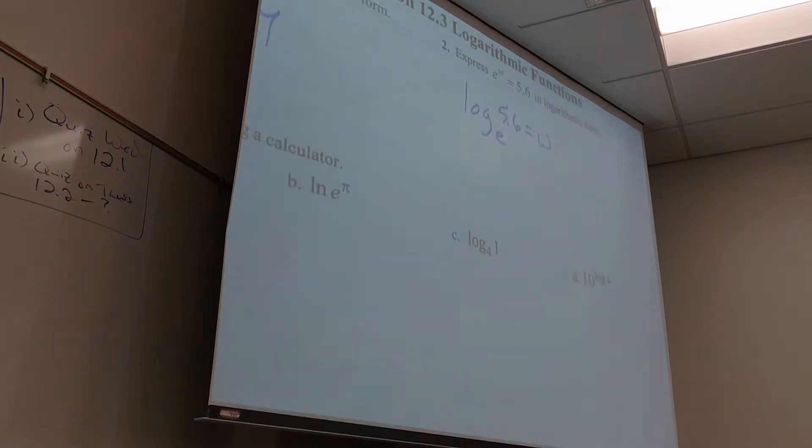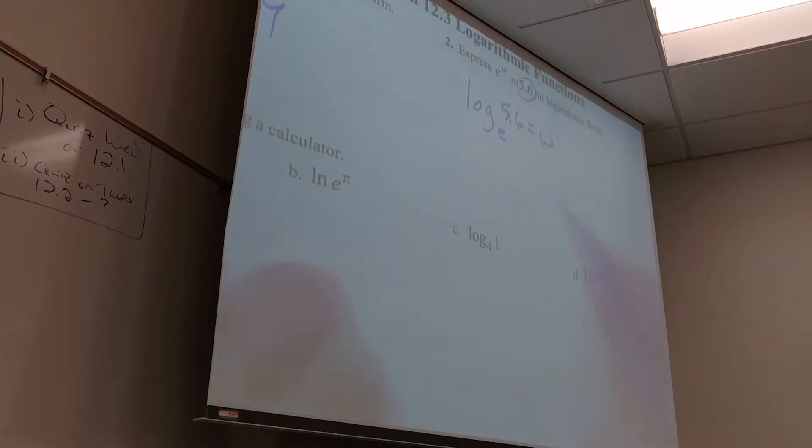Real quick. What do inverse functions do with each other? One inverse function's output is the other function's input. Watch this. The output to the original was, what's the output here? 5.6. What's the input here? 5.6. So that's why it makes sense. The output becomes the input. The input becomes the output.